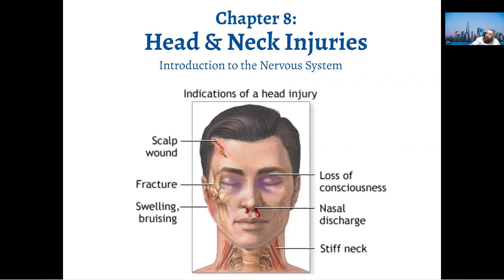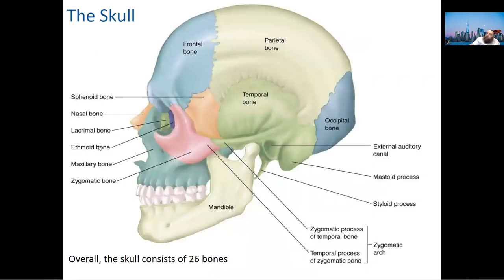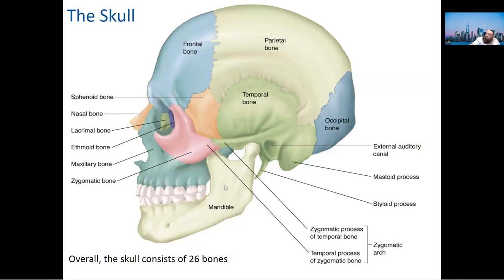Head and neck injuries. Picture the skull — you don't need to know all 26 bones. Know the mandible, which is the lower jaw where your lower teeth are. The mandible is the only moving bone in the entire skull. The upper jaw is the maxilla, where your upper teeth are, and it does not move. Know the difference between the mandible and the maxilla.